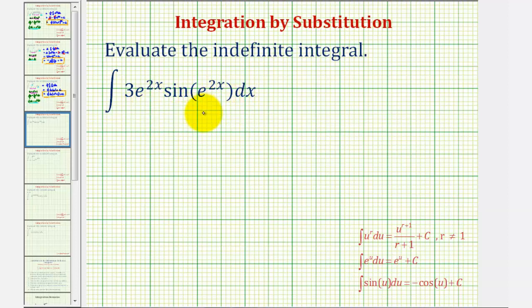Normally when we have a composite function, we let u equal the inner function. In this integrand, notice we have sine of e to the 2x. So we're going to let u equal e to the 2x.